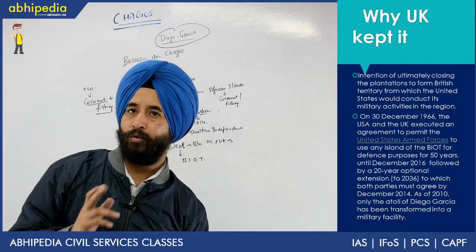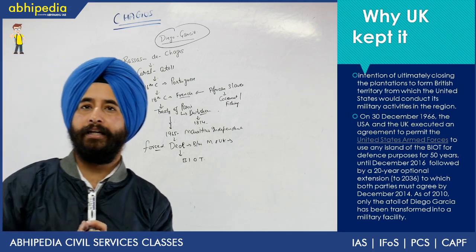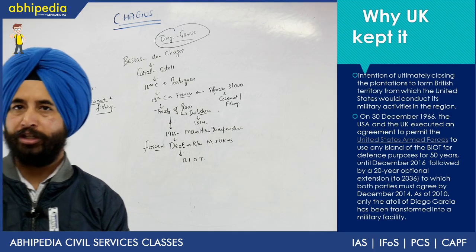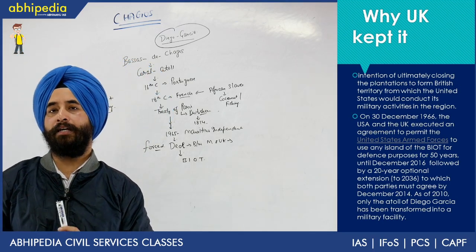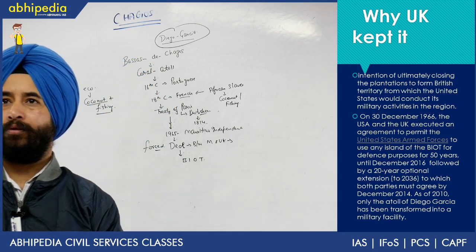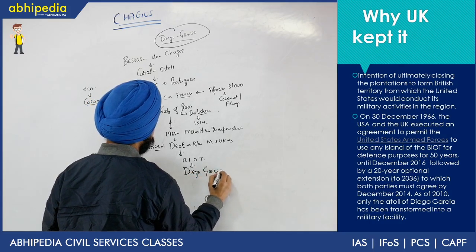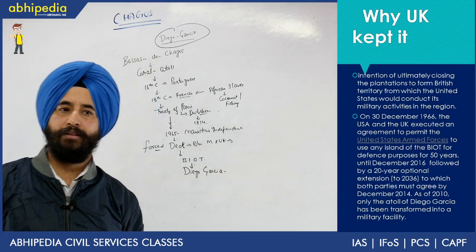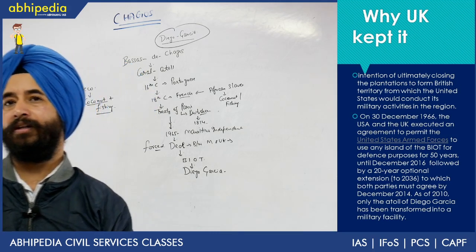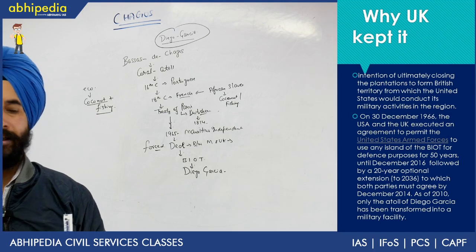Now, why was there a UK–USA agreement? The US said they needed a place in the Indian Ocean where they could position the United States Armed Forces — in case of war in the Indian Ocean, where they could launch attacks. So they established their base in Diego Garcia, with US armed forces stationed there. That lease deal was for 50 years, until 2016, after which they would give it a 20-year extension. So the lease agreement was between the UK and the USA.